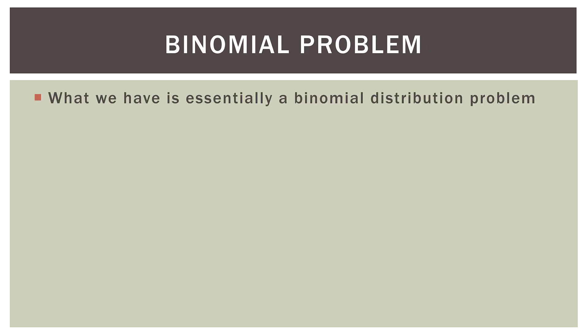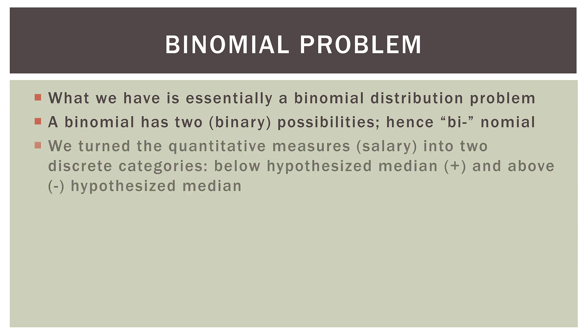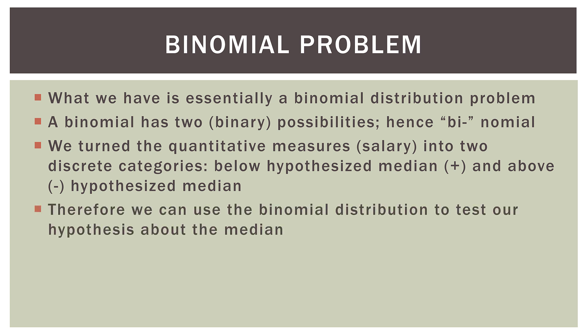So what we have is essentially a binomial distribution problem. So remember, a binomial has two or binary possibilities, hence binomial. What we did, we turned the quantitative measures, which is salary data, into two discrete categories, either below with a plus sign or above with a negative sign. The actual values themselves didn't matter. Therefore, we can use the binomial distribution to test our hypothesis about the median.